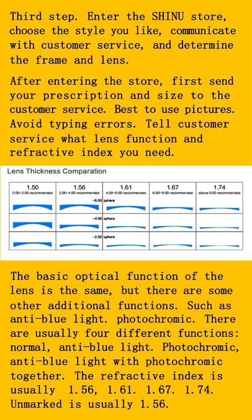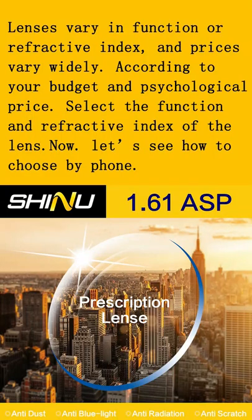The basic optical function of the lens is the same, but there are some additional functions, such as anti-blue light and photochromic. Lenses vary in function or refractive index, and prices vary widely. According to your budget and price expectations, select the function and refractive index of the lens.